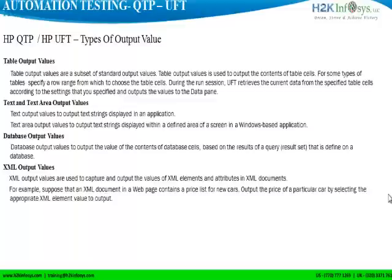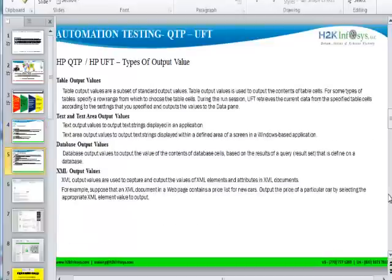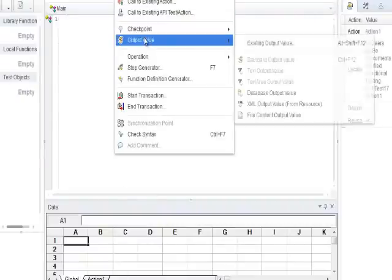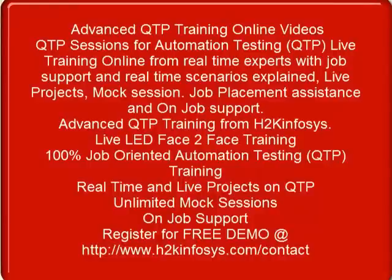XML output values are used to capture and output the values of XML elements and attributes in XML documents. Now let's see how to insert an output value in UFT. Go to design, click on output value, and it displays all the different kinds of output values. You select the kind of output value that you want to insert into the application.